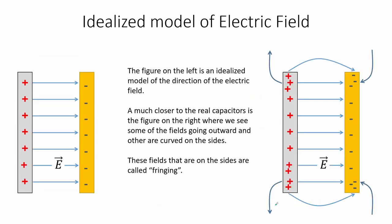The figure on the left is an idealized model of the direction of the electric field. Much closer to real capacitors is the figure on the right, where we see some of the fields going outward and others curved on the sides. These fields on the sides are called fringing. In dealing with capacitors, we ignore the fringing effects and consider the idealized model.